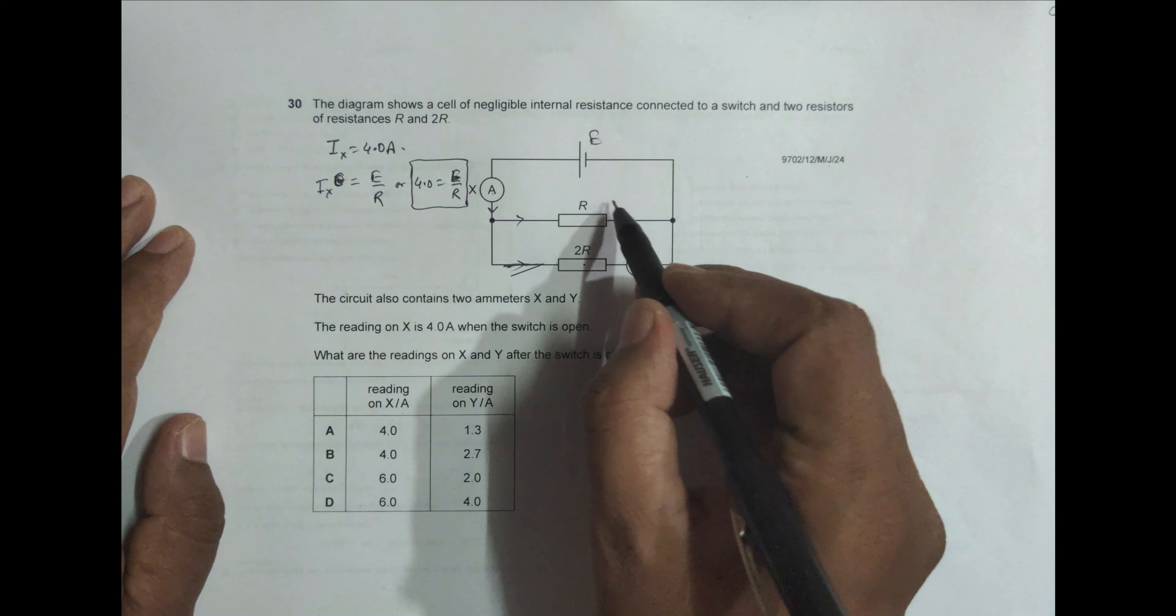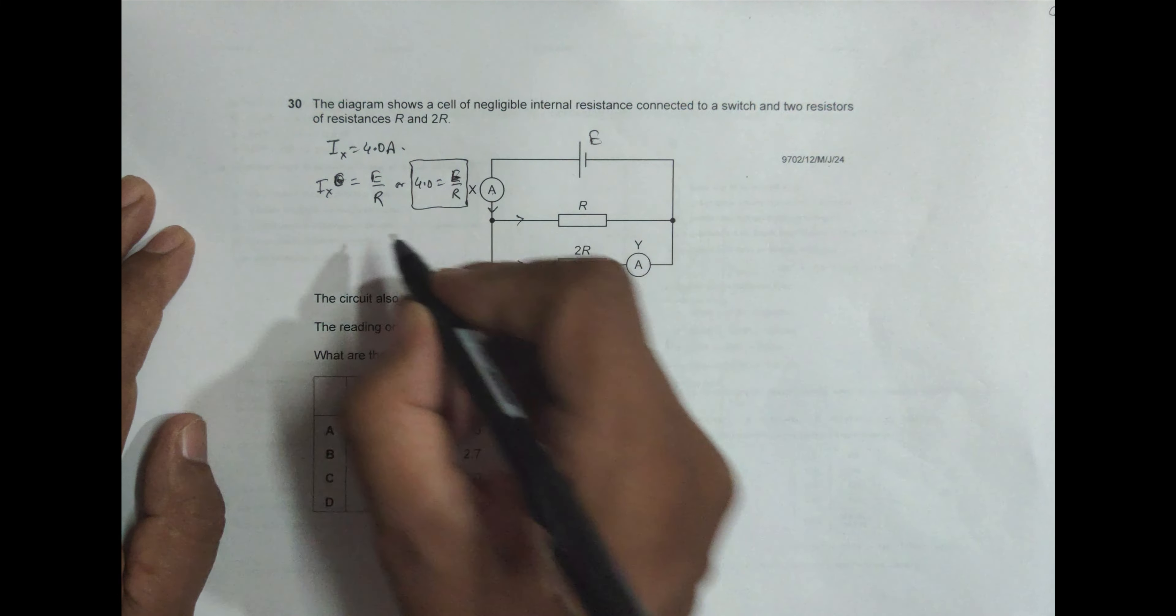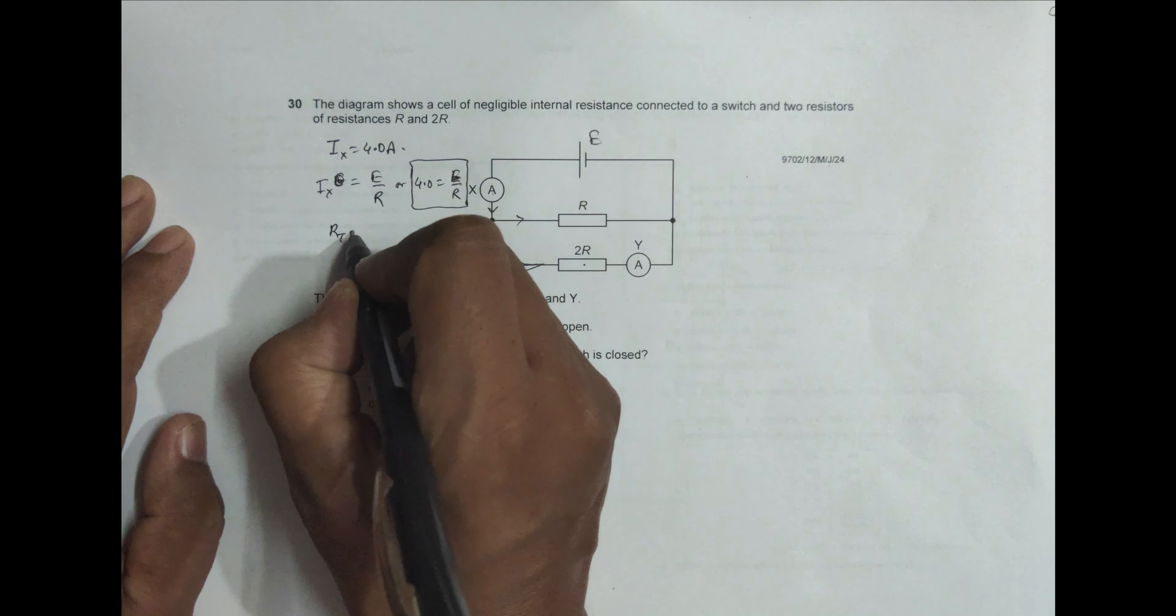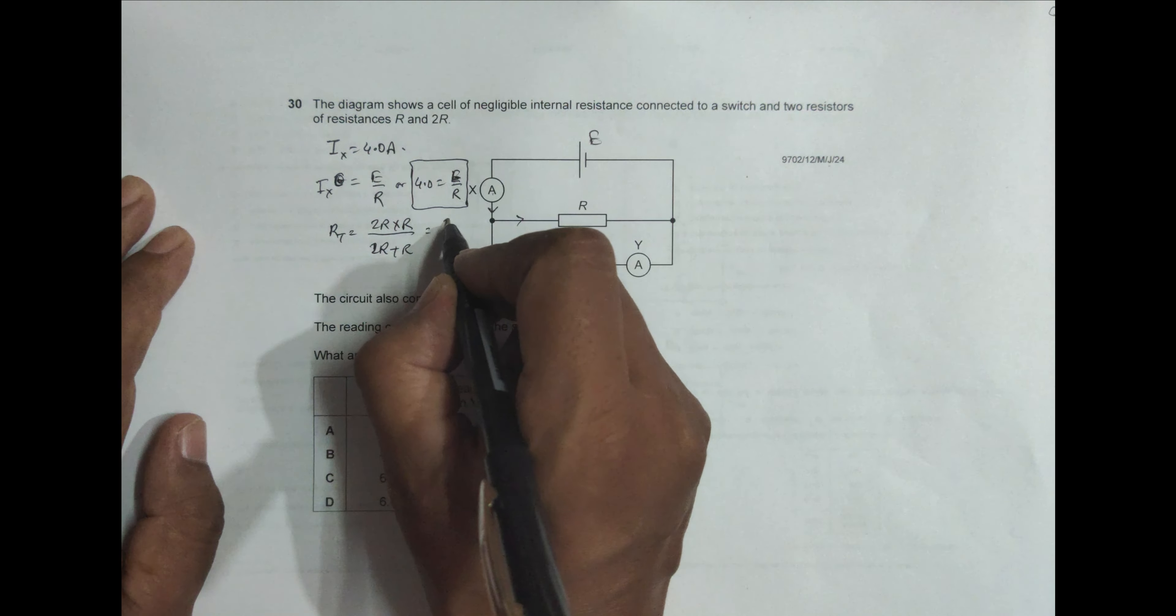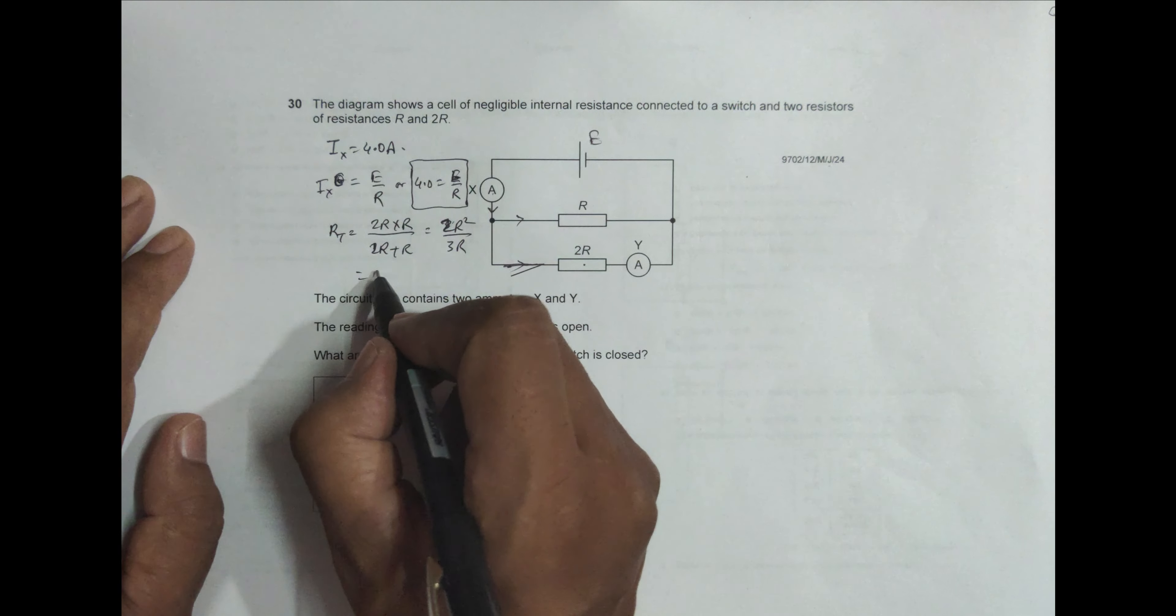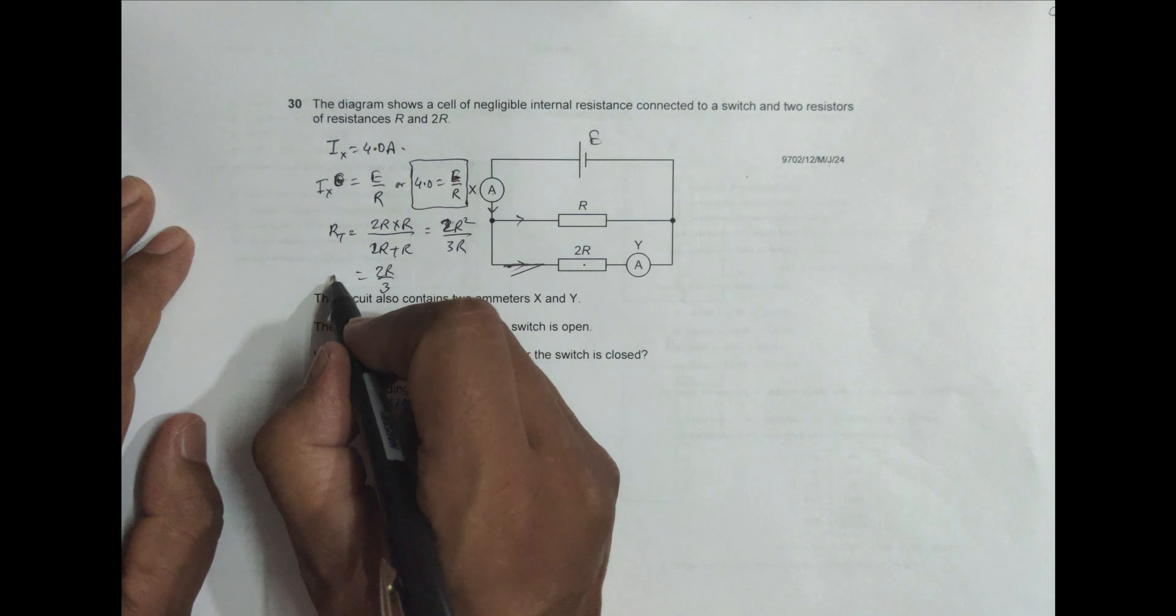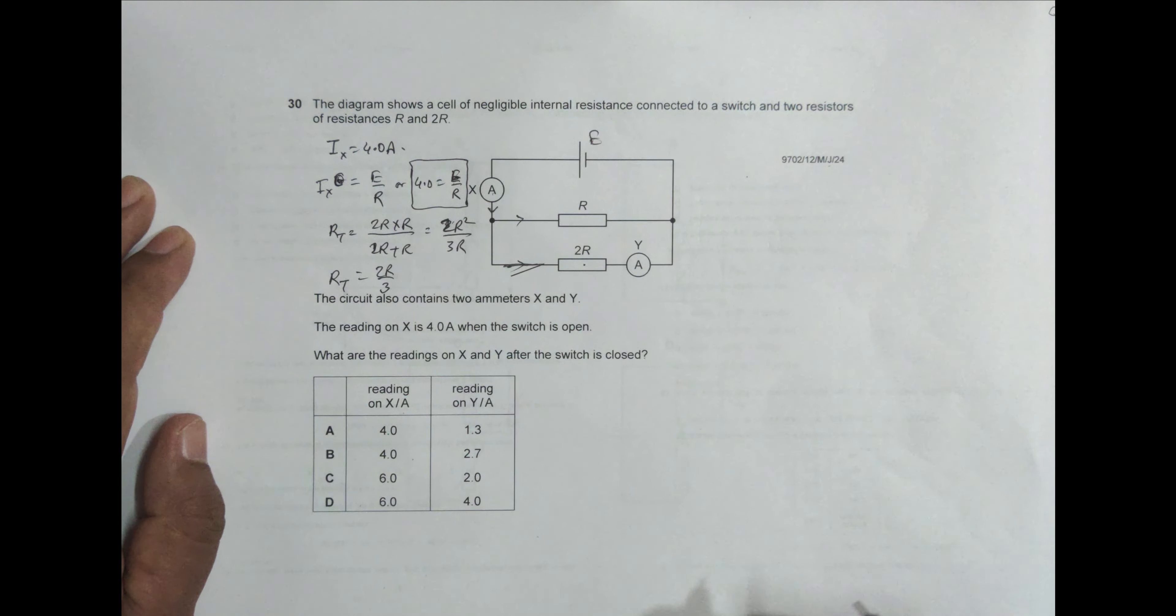So first let us find the value of this combined resistance R_total. So R_total will be equal to 2R into R divided by 2R plus R, that's equal to 2R squared by 3R, which is equal to 2R by 3. So this R_total is equal to 2 by 3 into R.